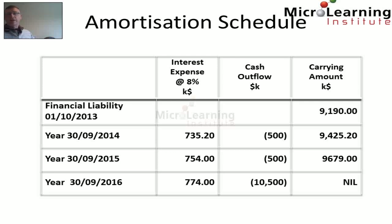Finally, for the year ending 30th of September 2016, the interest expense accrued is 8% of $9.679 million, which is $774,000 to the P&L of Bertrand. On 30th of September 2016 we pay an additional $10 million to redeem the bond at par plus $500,000 for the coupon interest. This final cash payment of $10.5 million will completely eliminate the financial liability on the books of Bertrand.